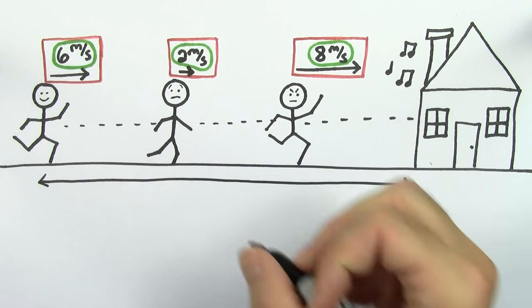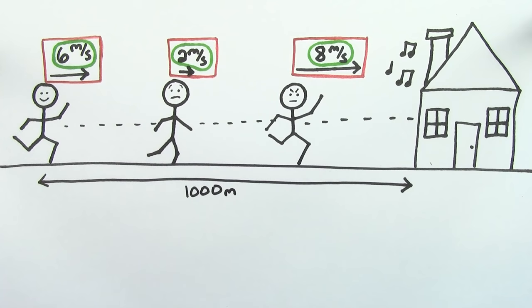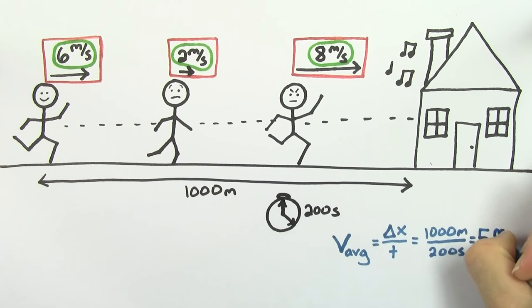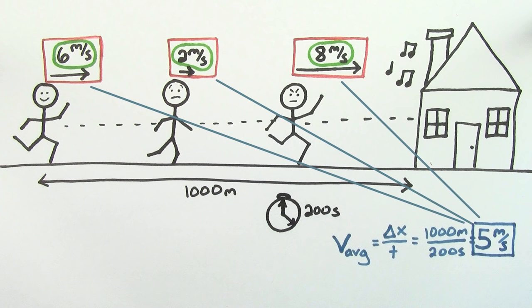Note that this is different from the average velocity. If your home was 1,000 meters away from school, and it took you a total of 200 seconds to get there, your average velocity would be 5 meters per second, which doesn't necessarily equal the instantaneous velocities at particular points on your trip.